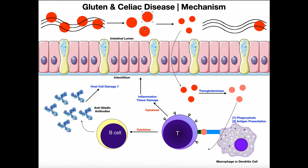Some of those gliadin proteins are removed from the glutenin strands and can be further broken down into smaller peptides — in some cases into individual amino acids. Some material that doesn't get broken down will just wind up in the feces. But here we have small peptides derived from gliadins, which means they're ultimately derived from gluten, specifically the gliadin part.